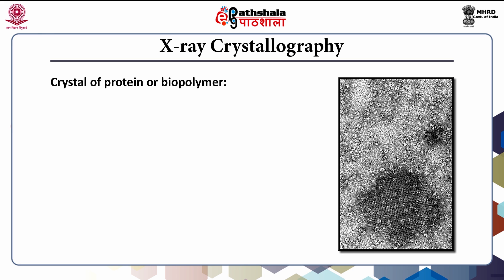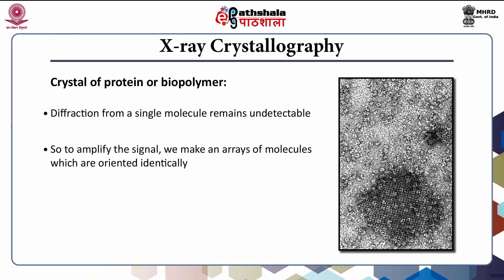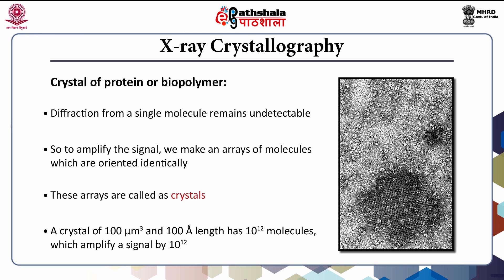Generally the crystals should not have only a single molecule; the crystal should have many molecules. Why? Because the diffraction from a single molecule is undetectable. So to amplify the signal we make arrays of molecules that are oriented identically — these arrays are called crystals. For example, a crystal of 100 micrometer cube volume contains 10^12 molecules, and such a high number of molecules is required to amplify the signal. In a crystal with 100 angstrom distance across, that amplifies a signal of 10^12.